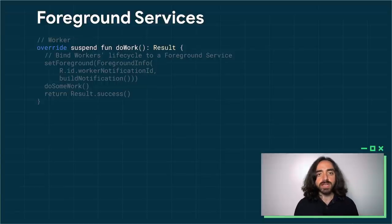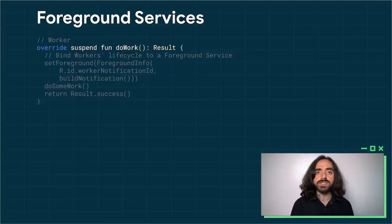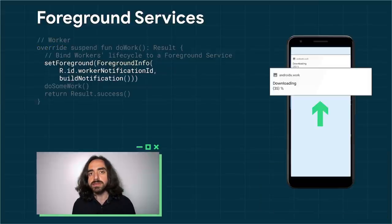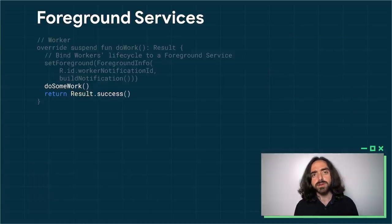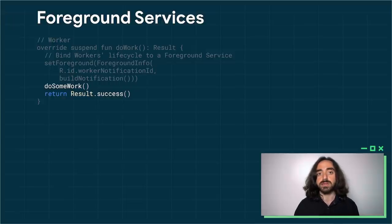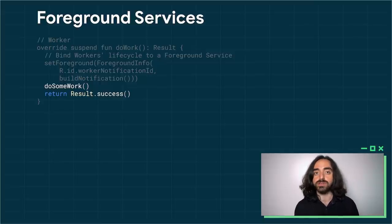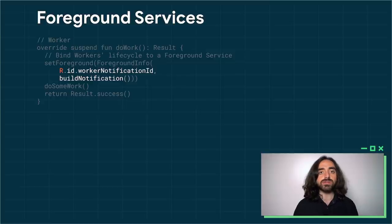WorkManager now supports long-running or important work that should be kept alive by the operating system. Here's an example of a worker that uses the foreground service API provided by WorkManager. When the worker starts, we call the setForeground method with a notification to display to the user. Finally, we do the actual work and return as usual — WorkManager will take care of dismissing the service. Because we are using a foreground service, this worker can run longer than the usual 10 minutes. Keep in mind, this API requires you to show a notification to the user, so use it sparingly.